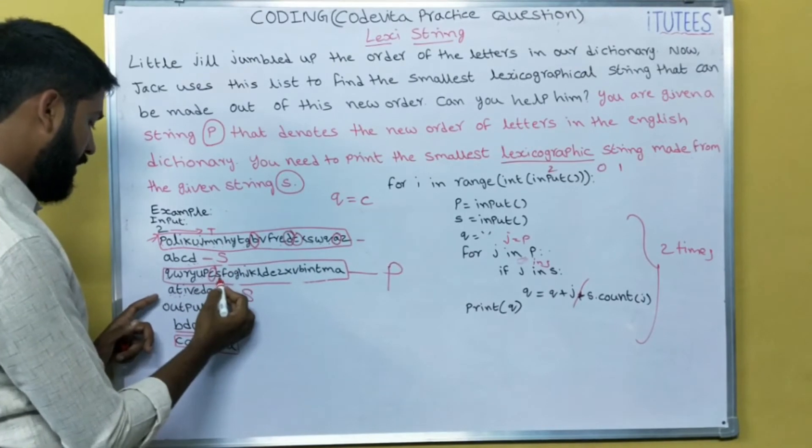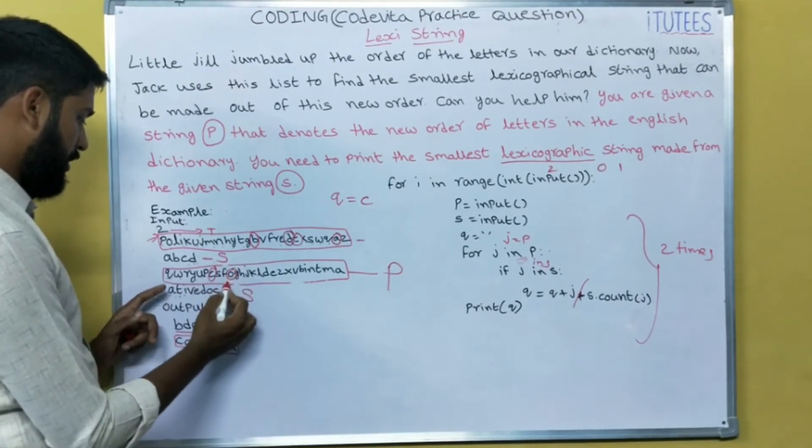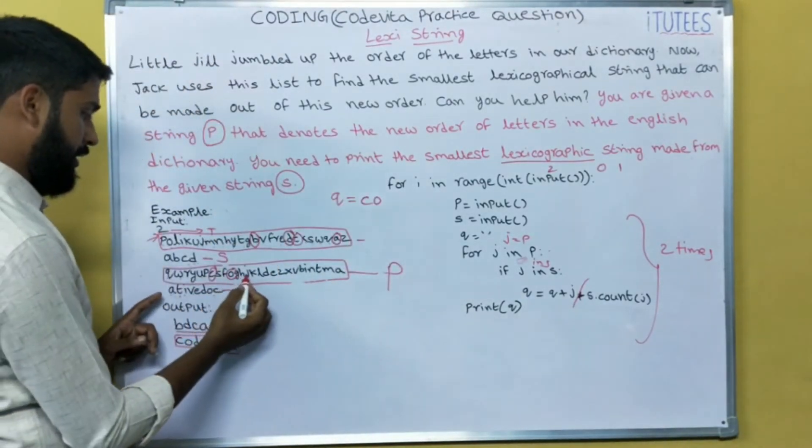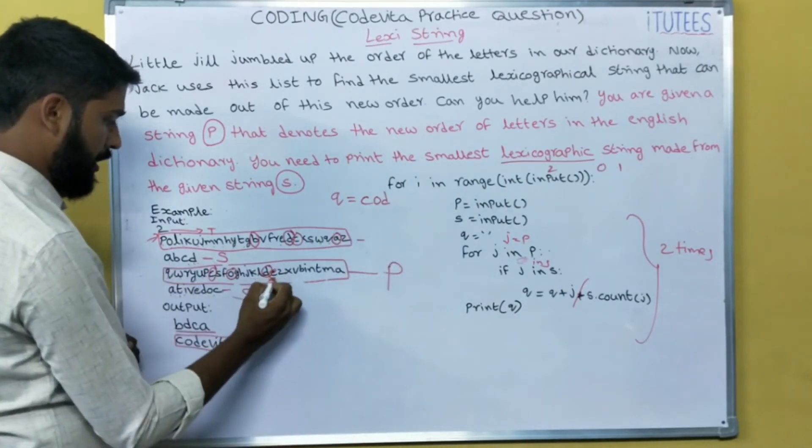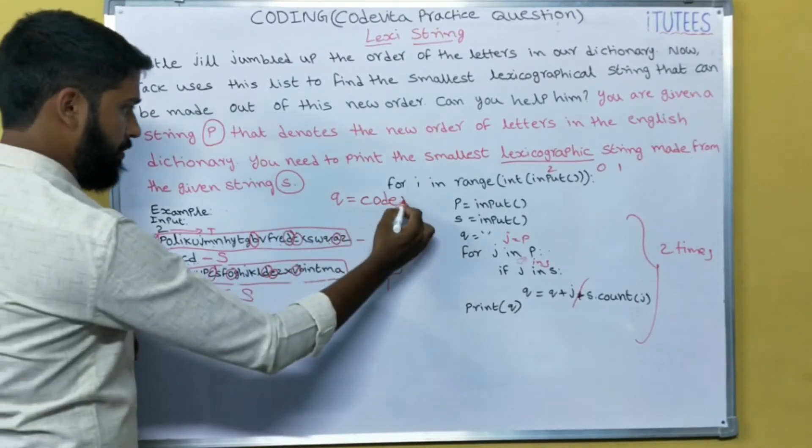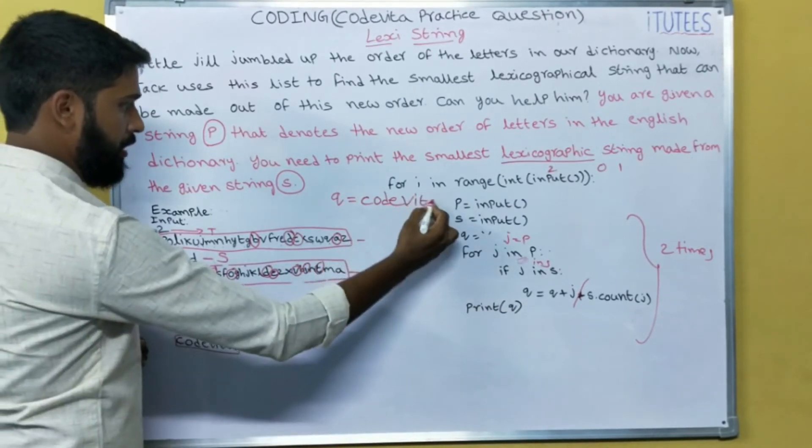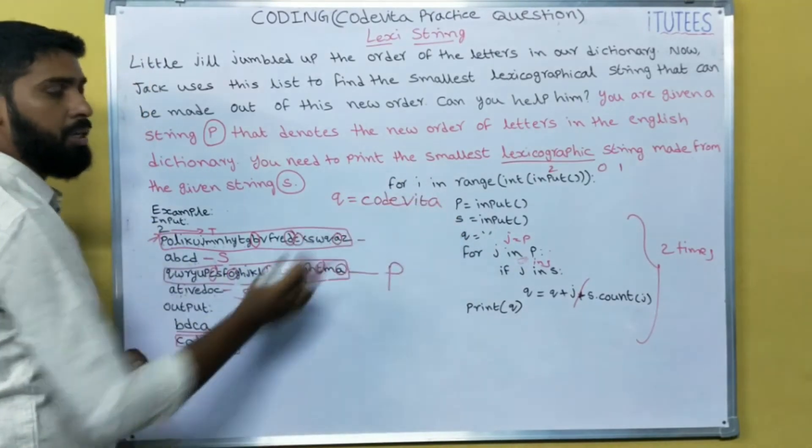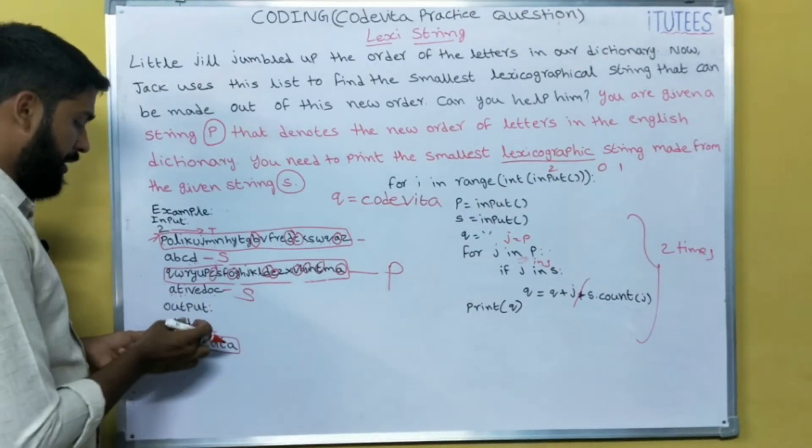C is in this, so Q equals to C. Next, S is in S? No. F? No. O? Yes, O is in this. So O. Like that here, D is in S, E is in S, V, I, T. Yes, A. So this is the lexicographic string for this string. Code beta. Now you can print code beta.